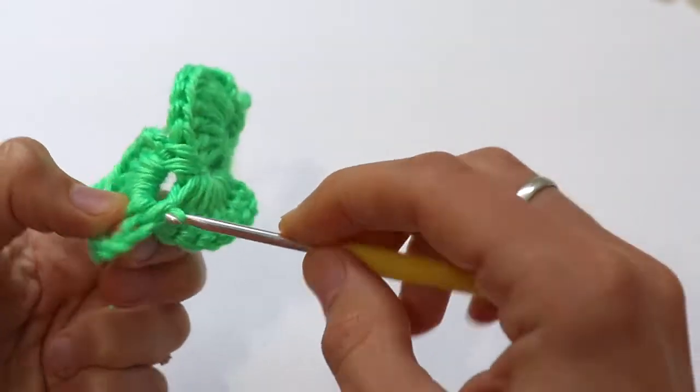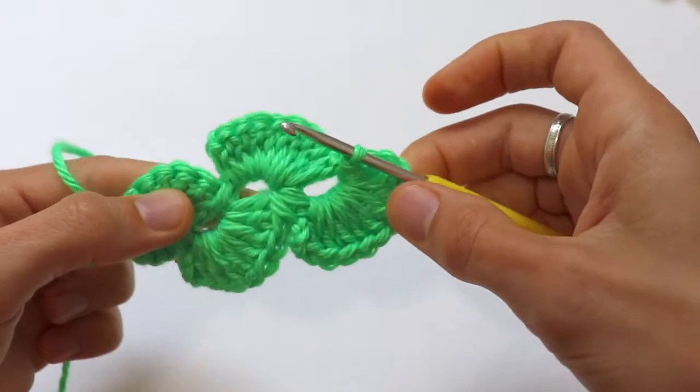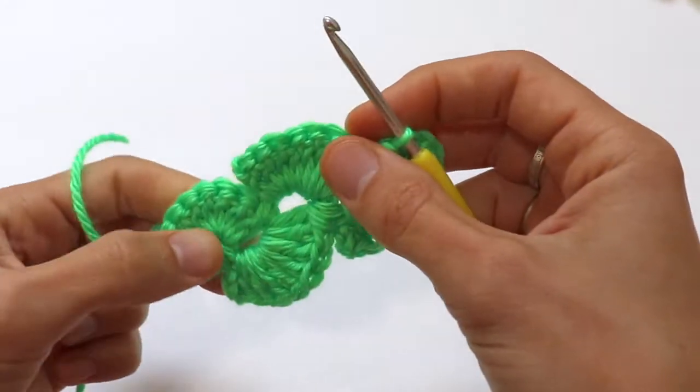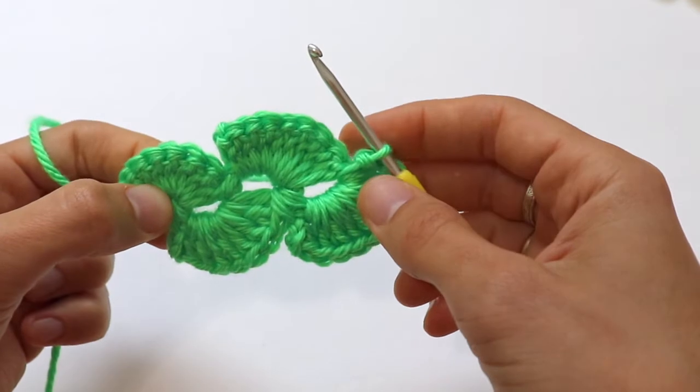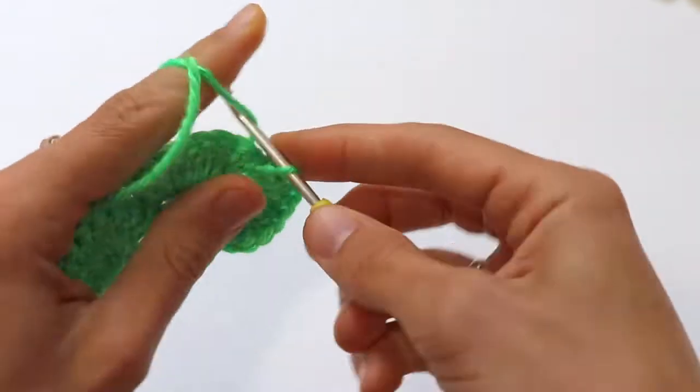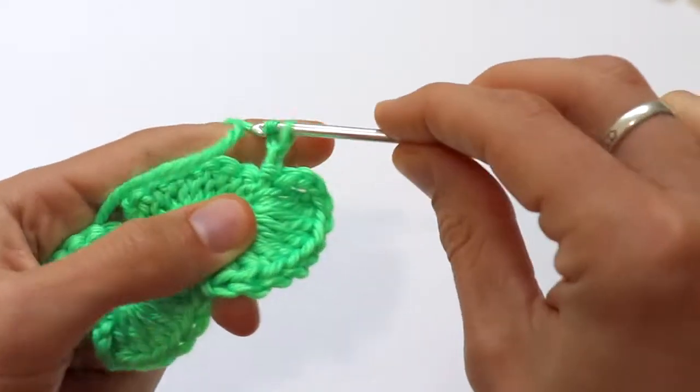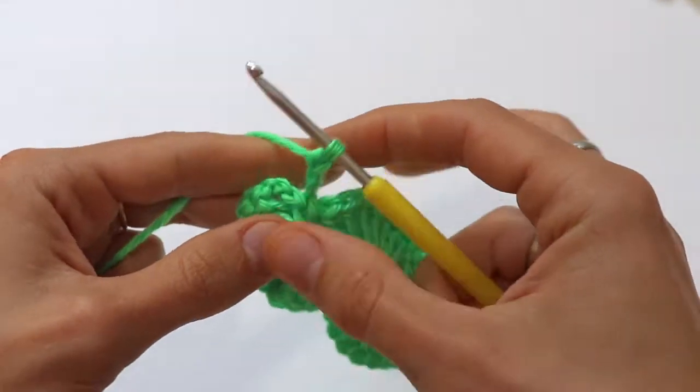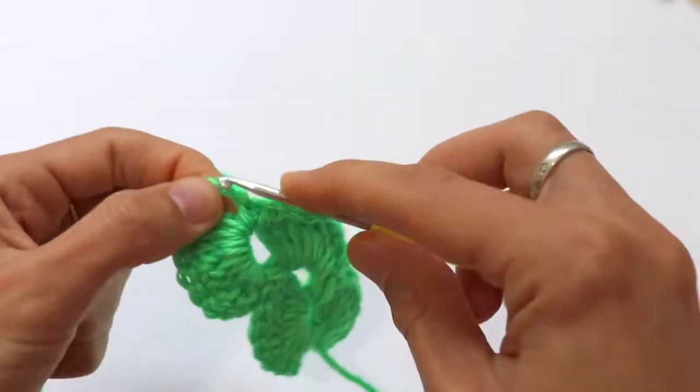And join with a slip stitch. Like this, you'll continue as many times as you want. Let me repeat it one more time, and then I'll show you how to make stripes.